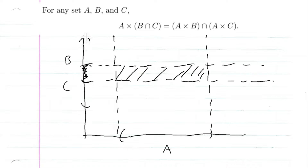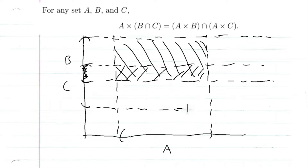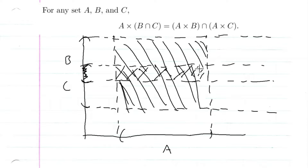So B is this entire area, and A cross B is this area here. And let's look at C now — so C is this here, and A cross C is going to be this area here. And A cross B intersection A cross C is that same area we were talking about with A cross (B intersection C).